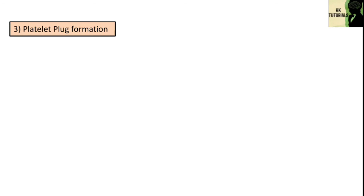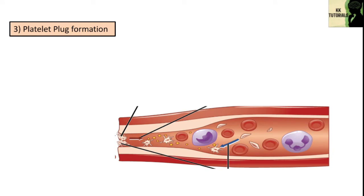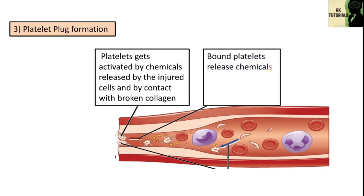The third important step in blood clotting is platelet plug formation. When injury occurs, platelets get activated by chemicals released by the injured cells and by contact with broken collagen. These bound platelets release chemicals that activate and attract other platelets. This results in the formation of a platelet plug.